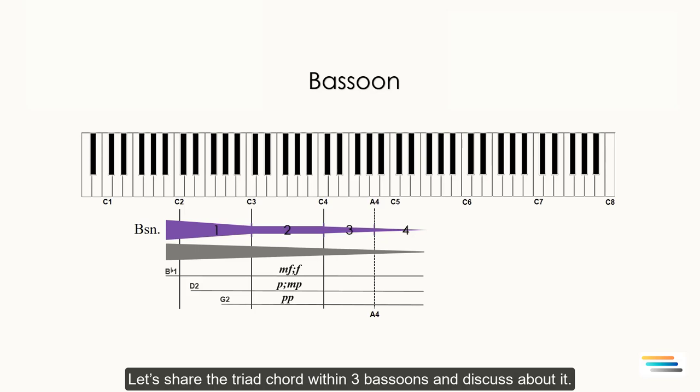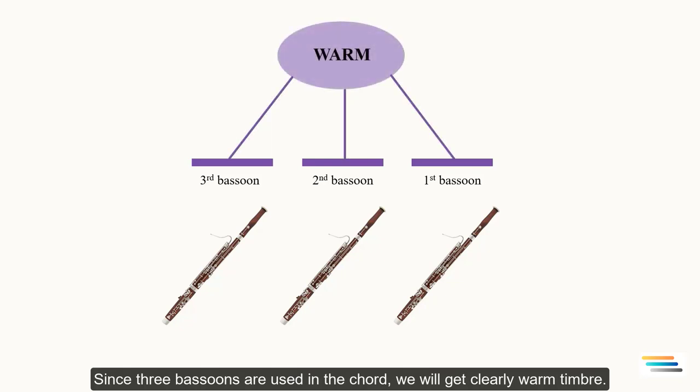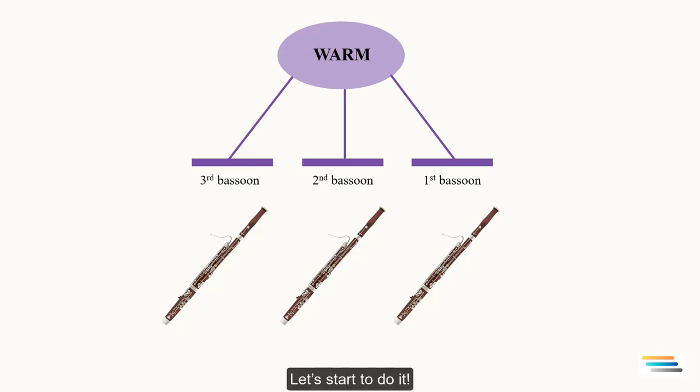Now you know the strengths and weaknesses of this instrument. Let's share the triad chord within three bassoons and discuss about it. The bassoon has a warm tone color, that's why I show it as purple color. Since three bassoons are used in the chord, we will get clearly warm timbre. Let's start to do it.